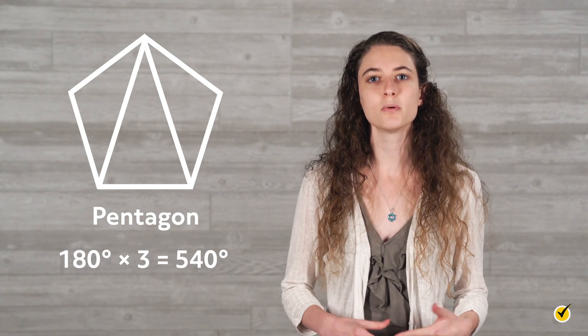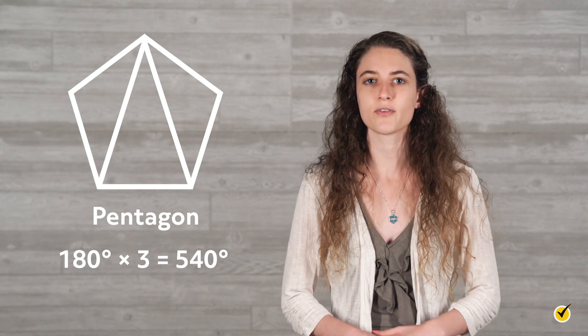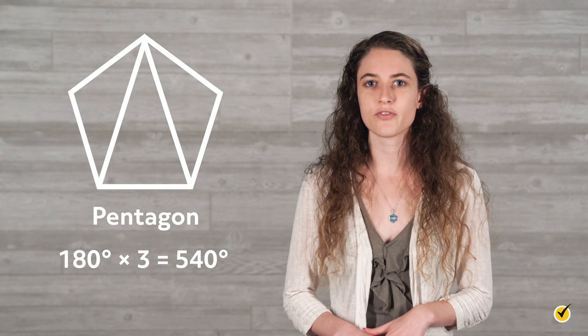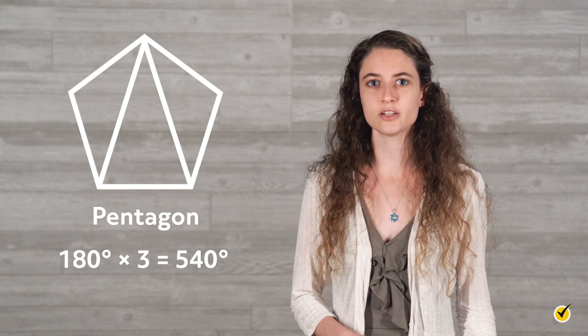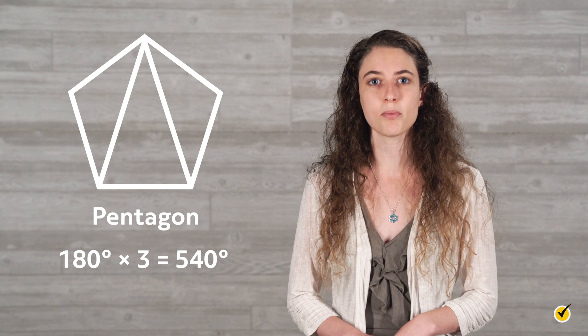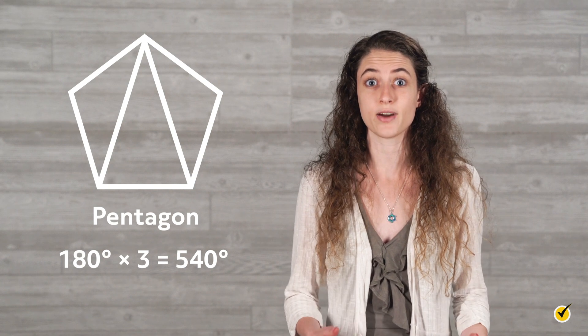A polygon with five sides is called a pentagon. As you can see, I was able to create three triangles inside the pentagon. To find the sum of the interior angles of the pentagon, we will multiply 180 by 3, which is 540 degrees. As you can imagine, finding the sum of the interior angles using this method of creating triangles can become quite tedious if we are dealing with a polygon with 25 sides.